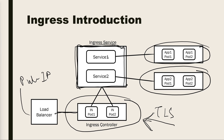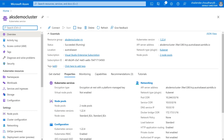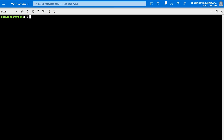In this demo, we'll first create the ingress controller, then create two different deployments for application 1 and application 2, create a ClusterIP service for each, and finally create the ingress service to manage those ClusterIP services, which will create the different routing rules. We'll use the same AKS demo cluster used throughout the AKS series. Let's go to the cloud shell and check the cluster nodes.